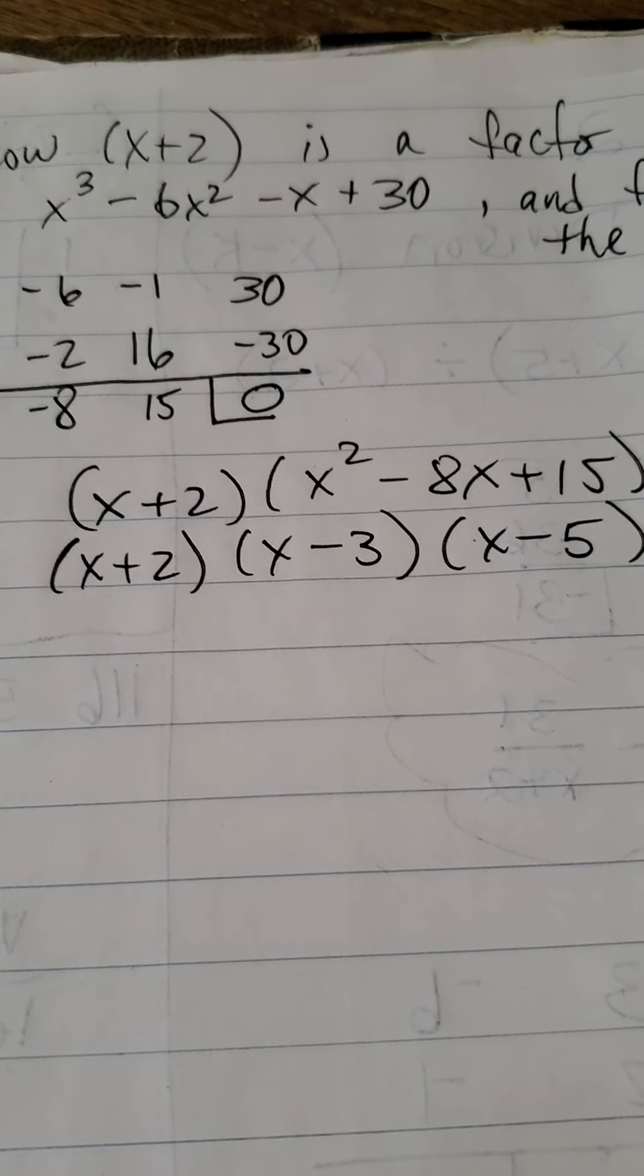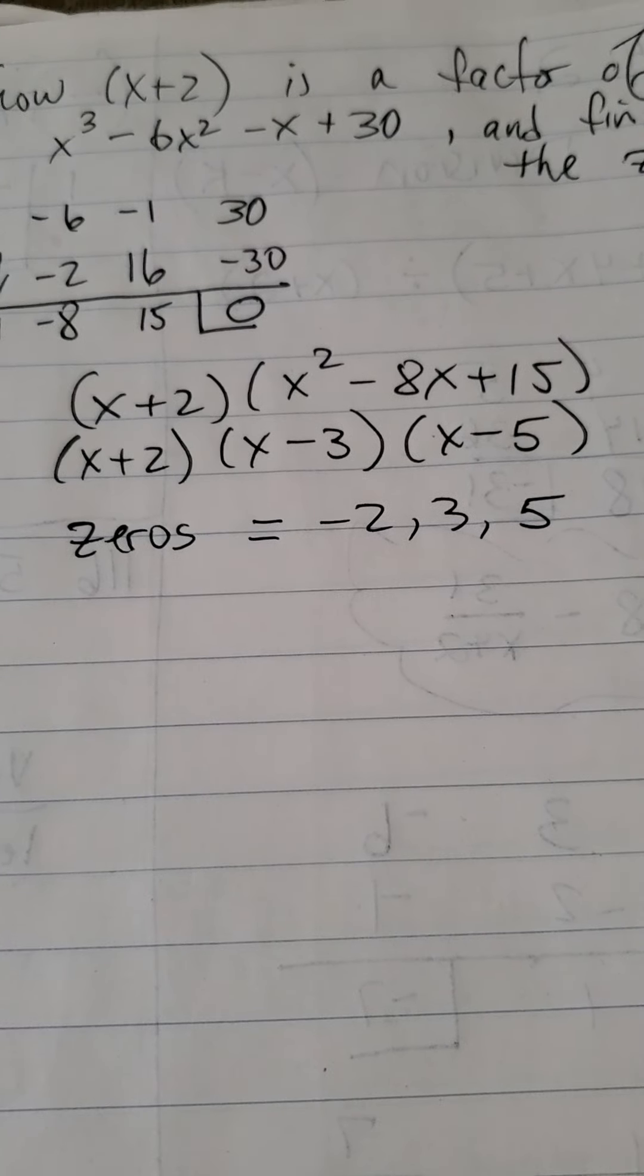And even I know that that would be x minus 3 and x minus 5, which means that the three zeros of this polynomial are negative 2, 3, and 5.